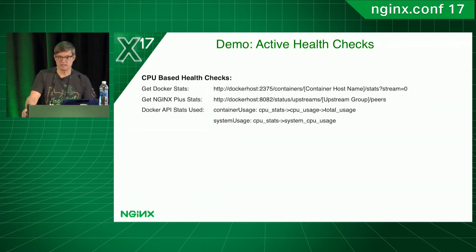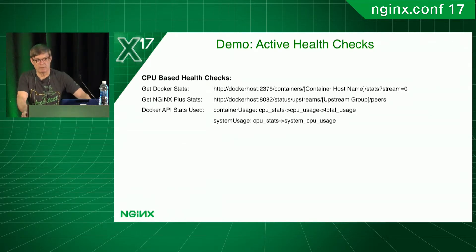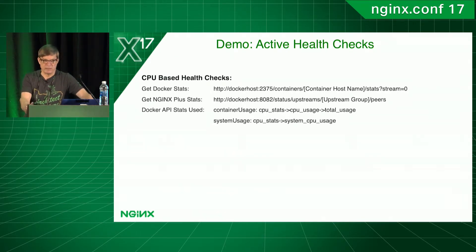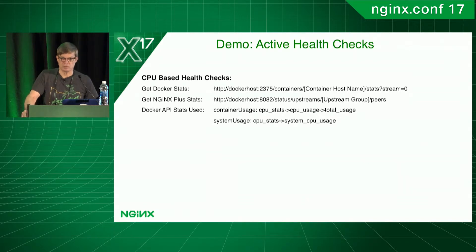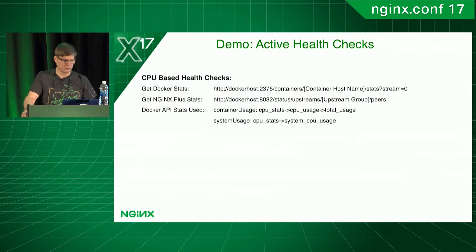I use the NGINX Plus status API to find out how many containers there are, divide the threshold by that number, and that tells me how much CPU each container can have. So if I have one container, it can use 70% of the host. If I have two containers, each one can get 35%, and so on. As it scales, each one is allowed a little less CPU.